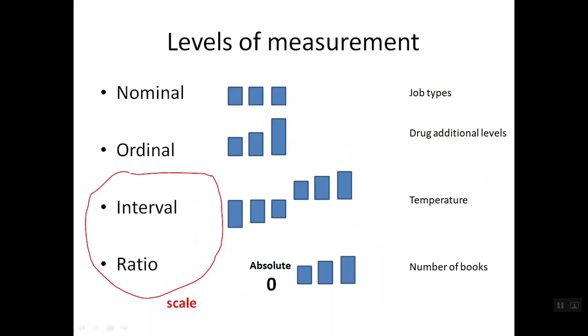Ordinal data, it has different categories, but it also has order in different categories. One example is drug addiction levels. It can be low, medium, and high. Between median and high, there's difference. Median is lower than high. But the distance between median and high is not clear.